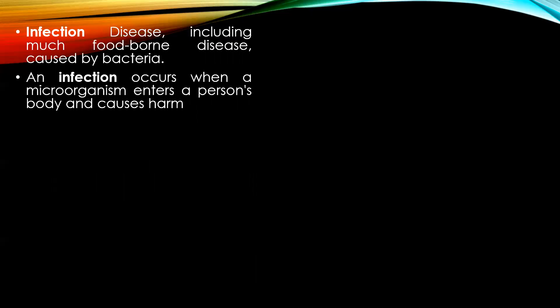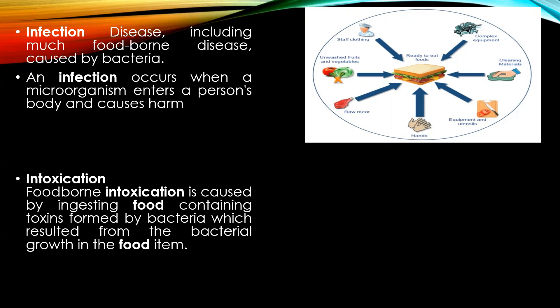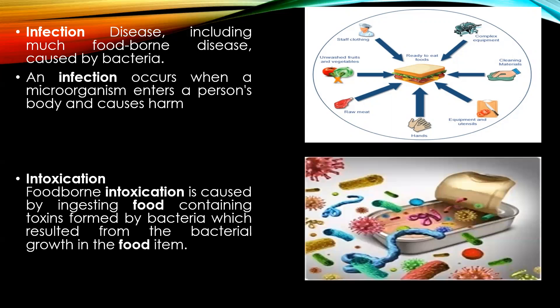The next term is infection — a disease, including most foodborne diseases, caused by bacteria. An infection generally occurs when a microorganism enters a person's body and causes harm. The next term is intoxication. Foodborne intoxication is caused by ingesting food containing toxins formed by bacteria, which resulted from bacterial growth in the food item itself. These toxins result in a variety of illnesses in consumers.